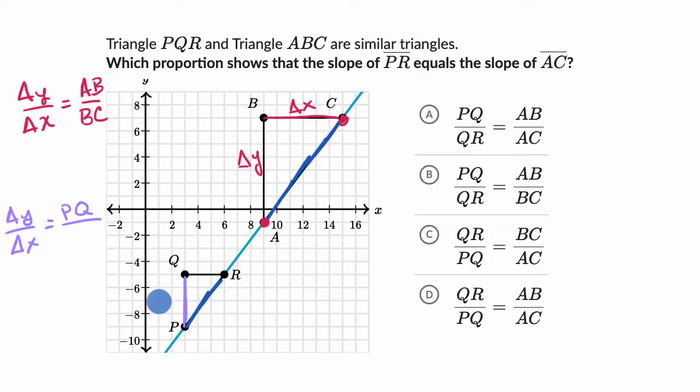And now what's its change? So this is its change in Y, and then the change in X going from P to R, change in X is segment QR, the length of segment QR.